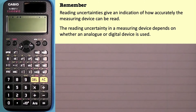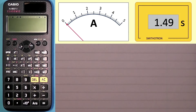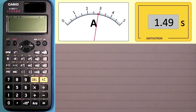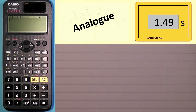So what is an analogue and what is a digital device? Let's have a look at two examples. On the left-hand side I have an ammeter measuring a current of 2.9 amps. On the right-hand side we have a stopwatch that has measured a time of 1.49 seconds. The device on the left, where you can see the full scale going from 0 to 5 amps — similar to a ruler where you look at where the end of an object meets the scale — that is an analogue device. The one on the right where you can just see the reading on the screen, 1.49 seconds, that is a digital device.